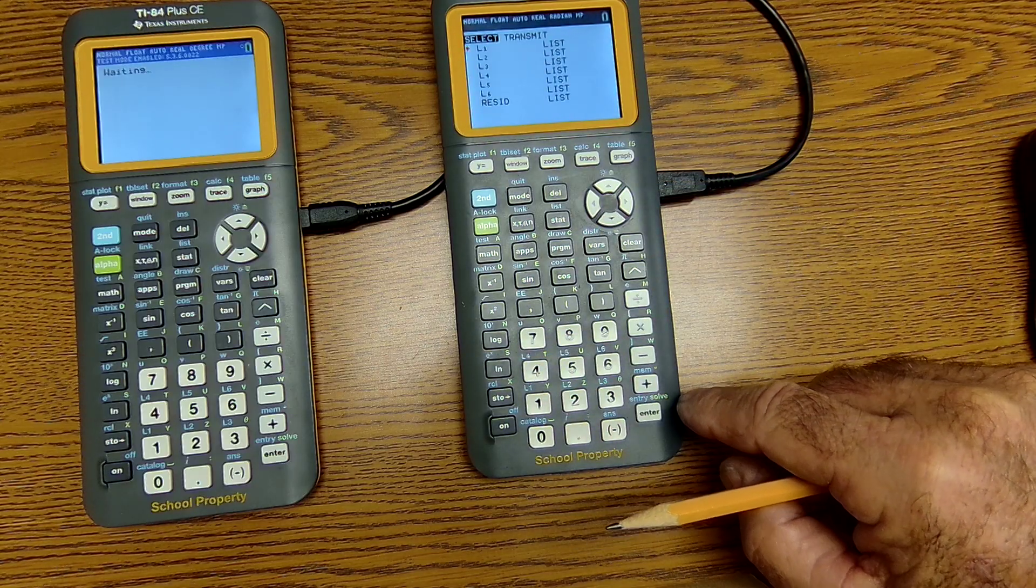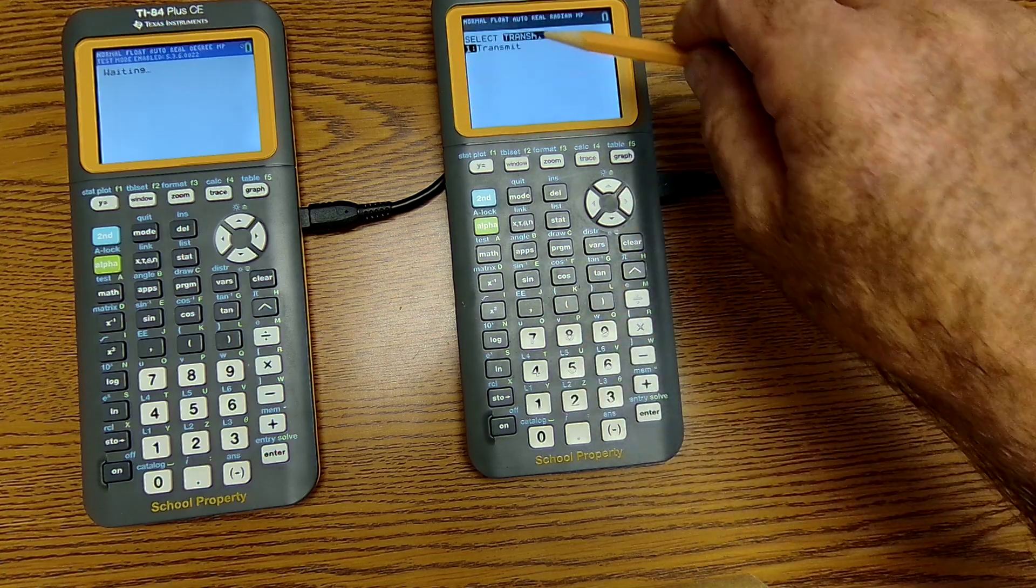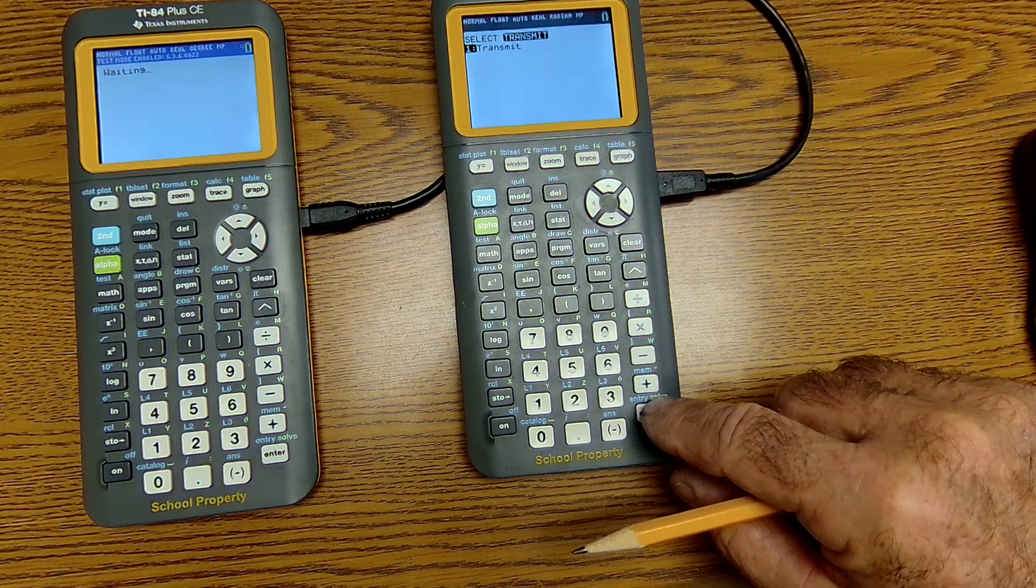List one, I'm going to hit enter. Then I'm going to scroll over to transmit. Transmit's highlighted. I hit enter.